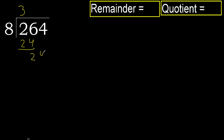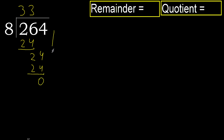Next, bring down 24. 8 multiply by 3 is 24, which is not greater. Okay, 24 minus 24 is 0. Next, there is no number, therefore finish.